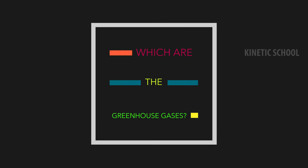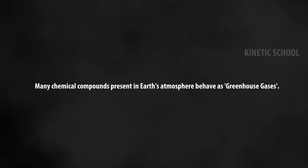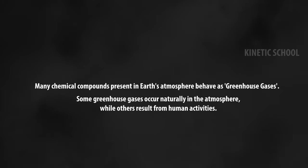Which are the greenhouse gases? Many chemical compounds present in earth's atmosphere behave as greenhouse gases. Some greenhouse gases occur naturally in the atmosphere, while others result from human activities.